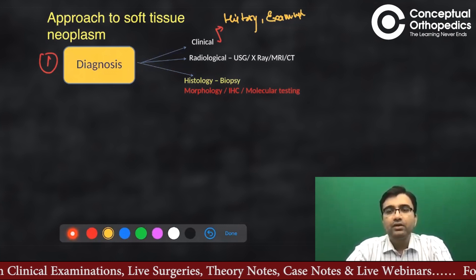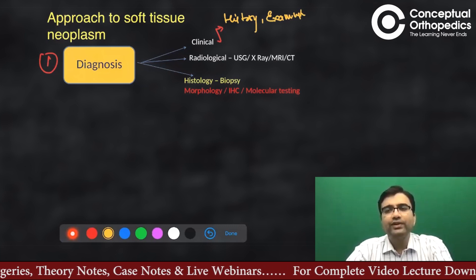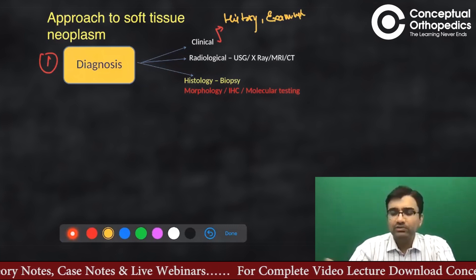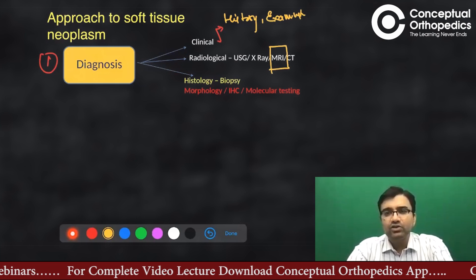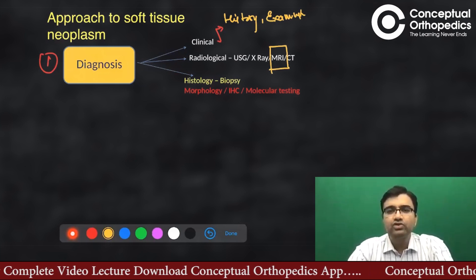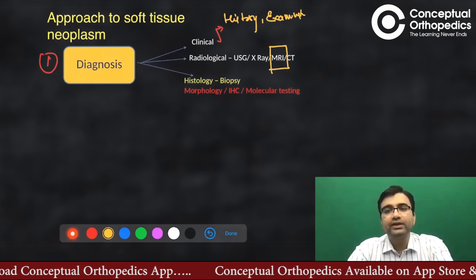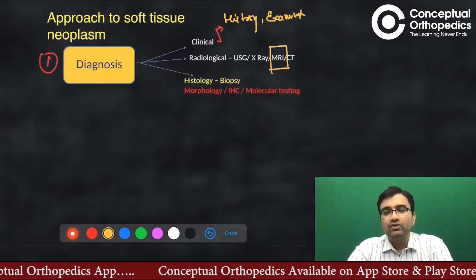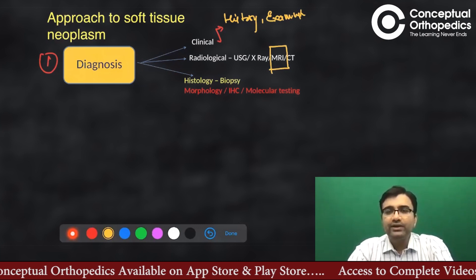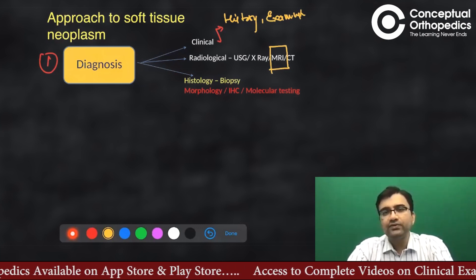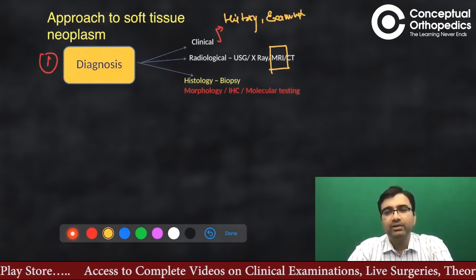A good clinical evaluation and history-taking is a must. Second are supportive investigations. You can ask for ultrasonography as the basic minimum. The gold standard is a contrast MRI, which gives you the exact location of the tumor, its characteristics, and its relationship to the neurovascular bundle. You then correlate it with histology. What is seen on MRI is a pictorial representation of what is inside, but many times the picture may not be clear and can be confusing.